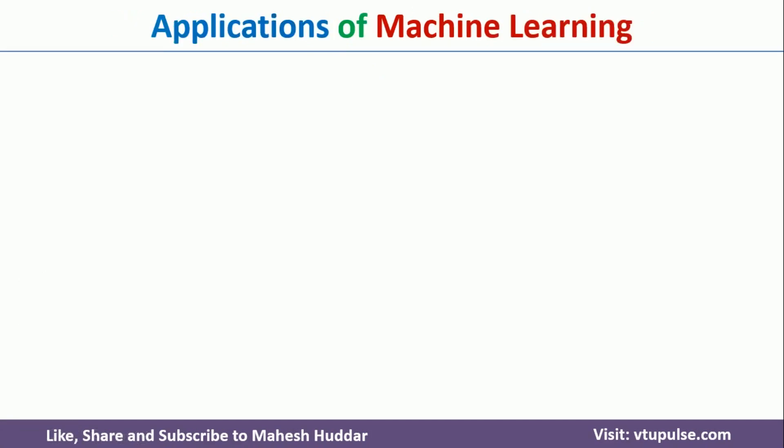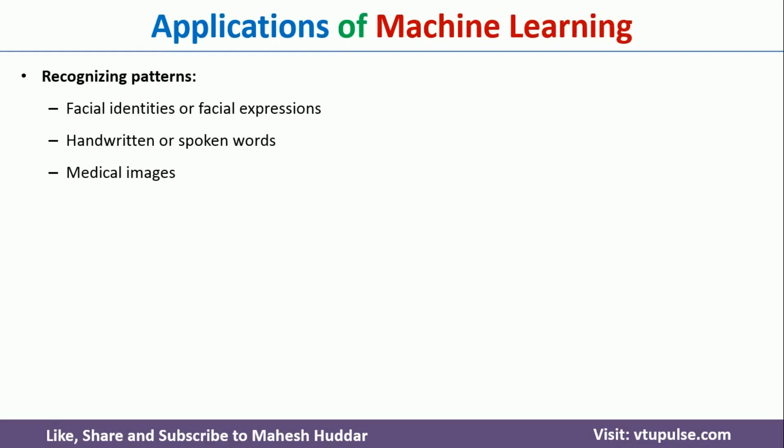What are the applications of machine learning? Machine learning is used everywhere — not just in computer science, but in mechanical industry, civil industry, and everywhere. Some applications include recognizing patterns: for example, facial identities or facial expressions, handwritten or spoken word recognition, and medical image recognition. Machine learning is heavily used in the healthcare industry where a lot of images are scanned, and based on image patterns, diseases are recognized and remedies suggested.